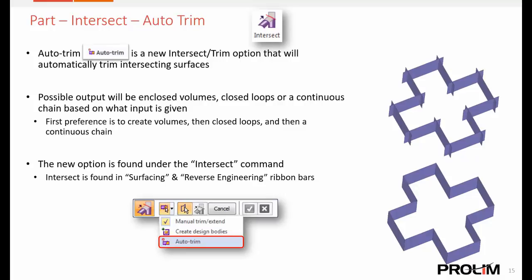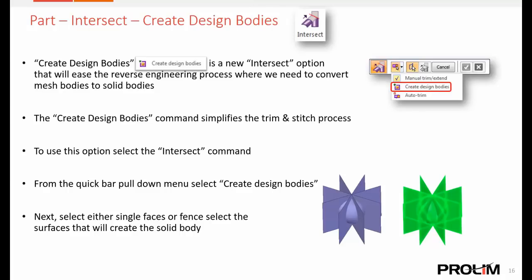Along with this, the intersect command has been enhanced — not only for reverse engineering but for all surfacing, though most beneficial in the reverse engineering context. There are new auto trim options where you can also create design bodies or use the old manual trim/extend. The auto trim option lets you select a group of surfaces and have it automatically determine which aspects should be deleted or removed. There's also a new aspect of the intersect command called create design bodies — if you have surfaces that intersect each other and you're trying to trim and stitch together, it does this all in one process, with options to pick what body to create, create multiple bodies, or union those bodies together.